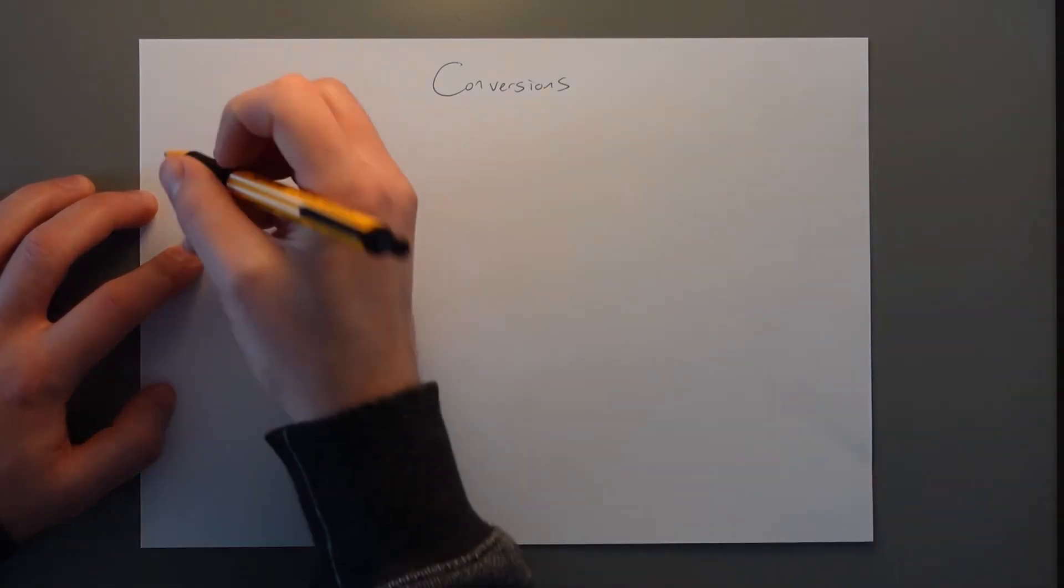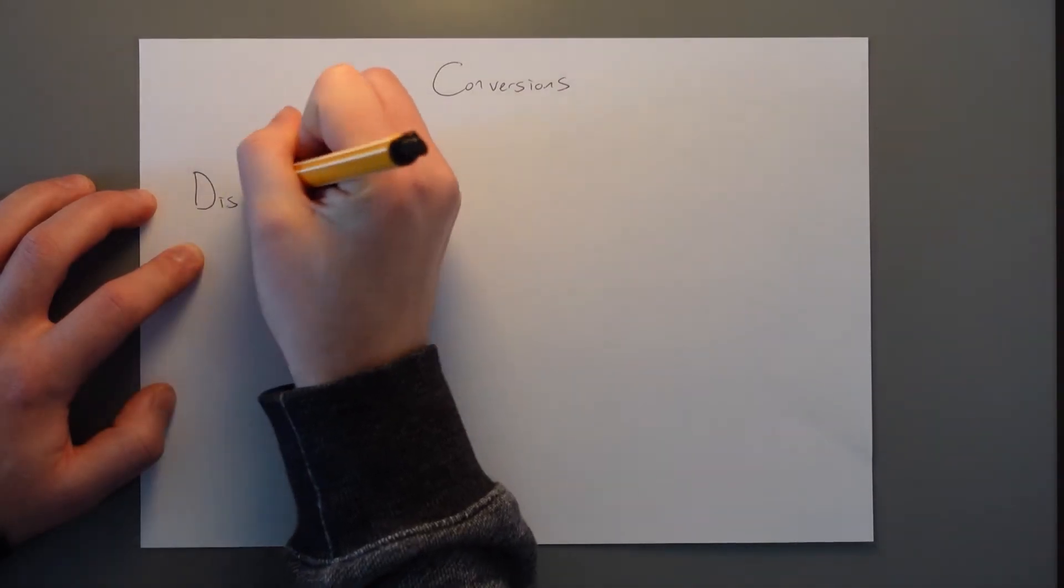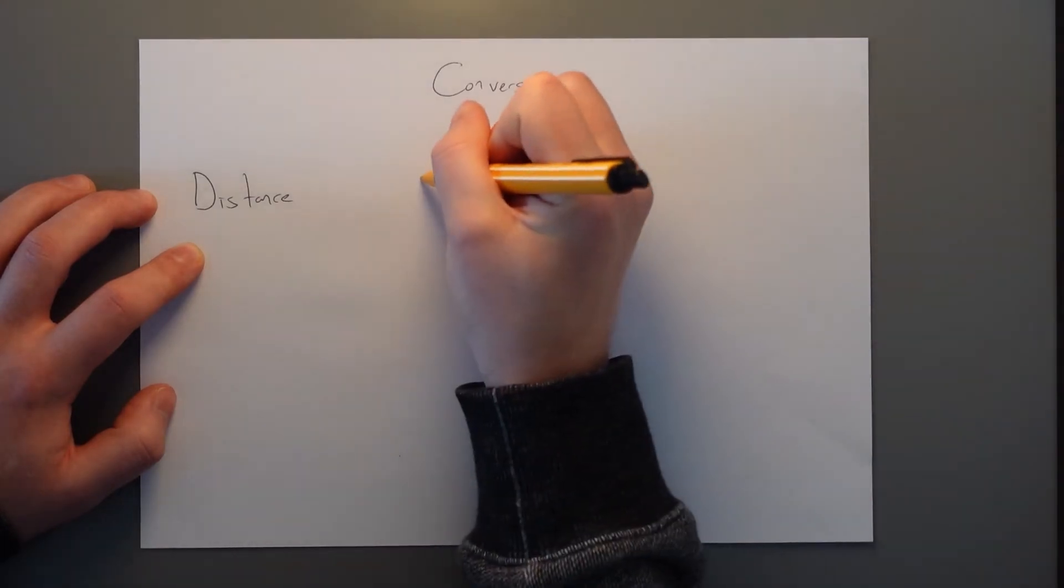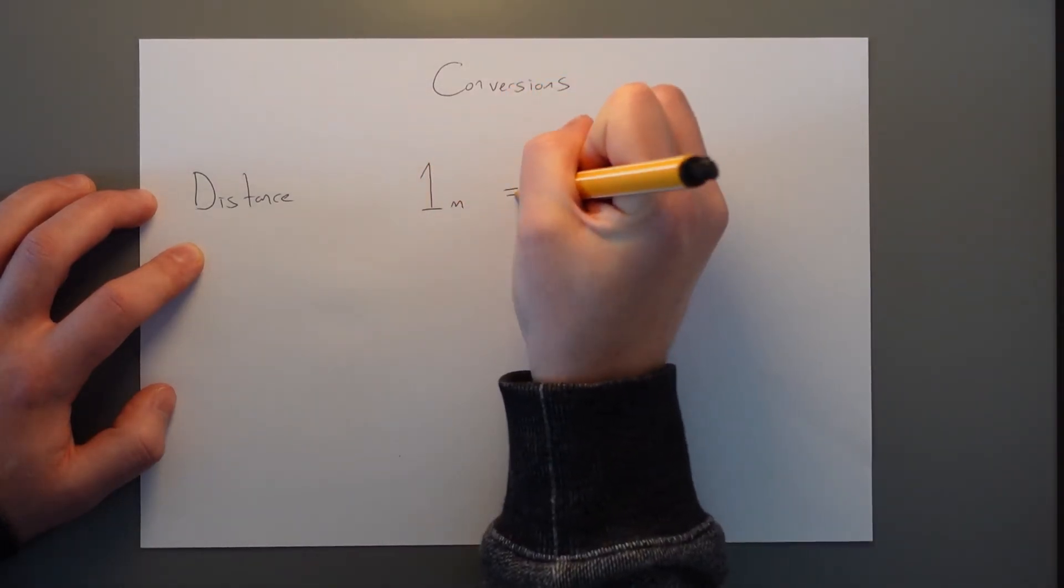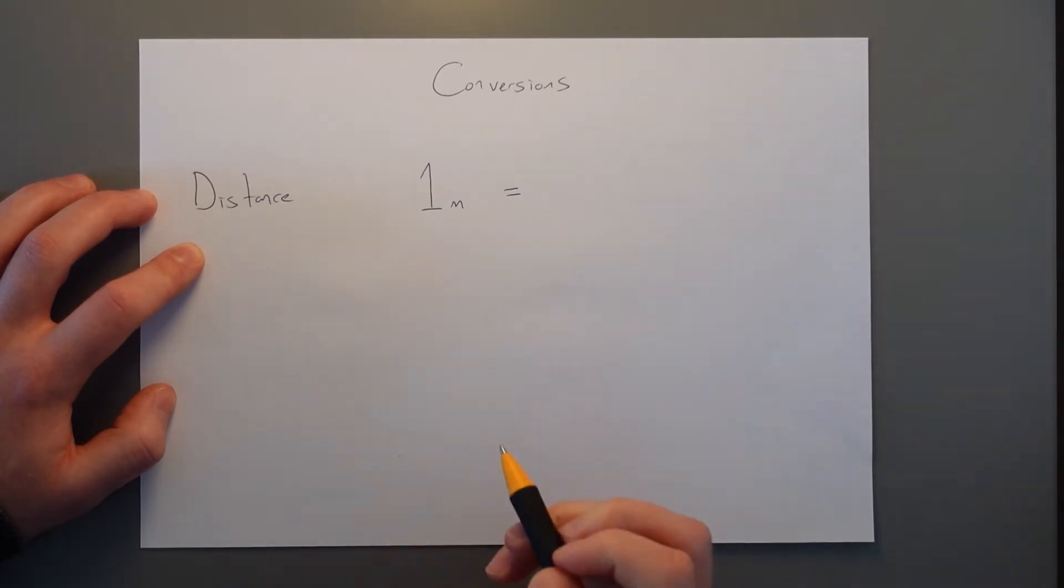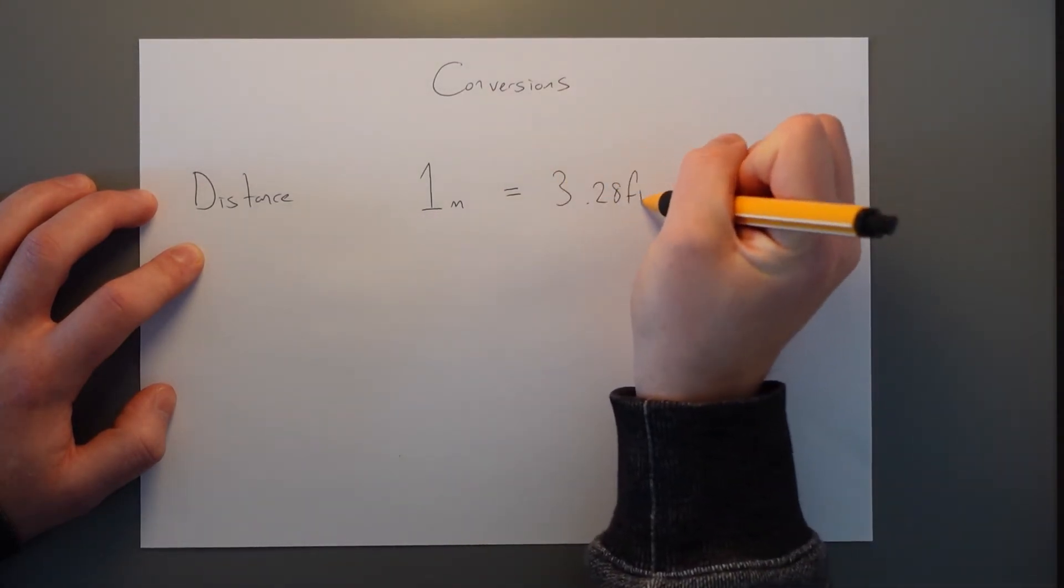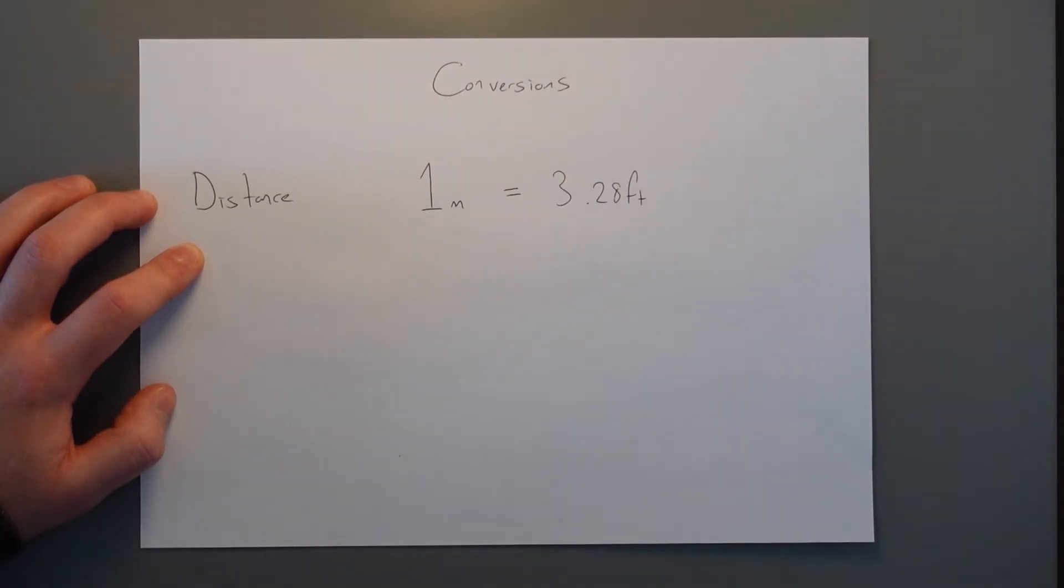The easiest to understand is distance. And in mass and balance specifically, the distances are usually quite small. So we deal with meters and feet. So one meter equals 3.28 feet. And if we want to go from one to the other, we either divide or multiply by 3.28.